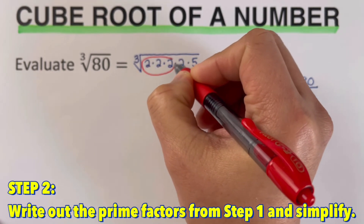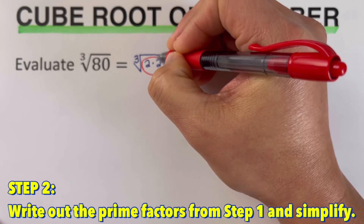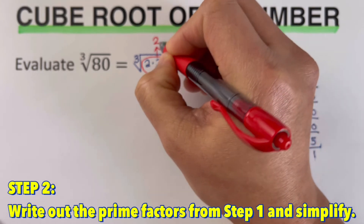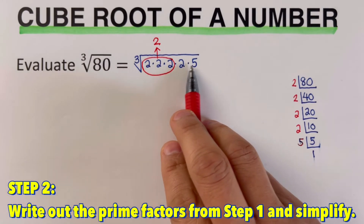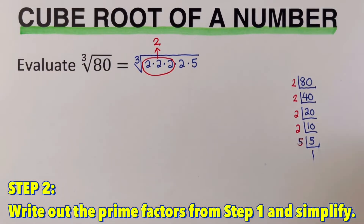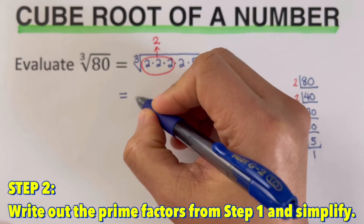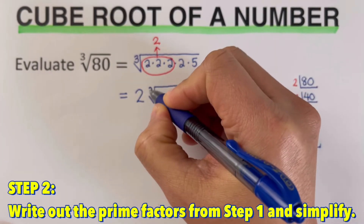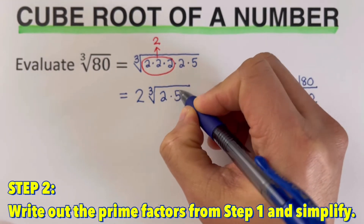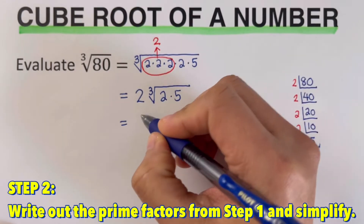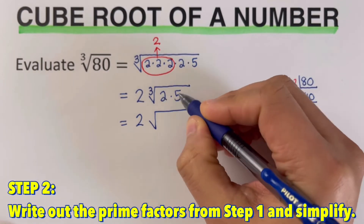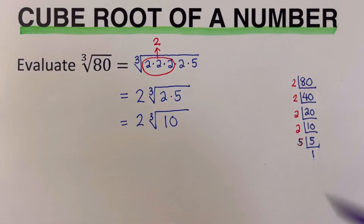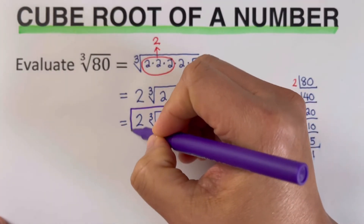Once they are grouped together — three of them — they are able to get out of the radical symbol. So that's 2. All the rest don't come in threes, so we keep them inside the radical sign. We put the 2 as the coefficient outside, and then that's the cube root of whatever's left over. That would be 2 times 5. So we simplify: 2 cube root of 10. That is the simplified version of the cube root of 80.